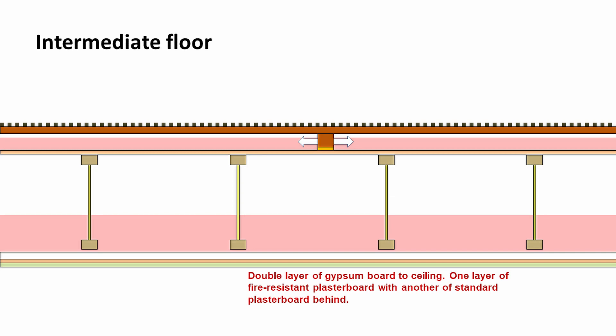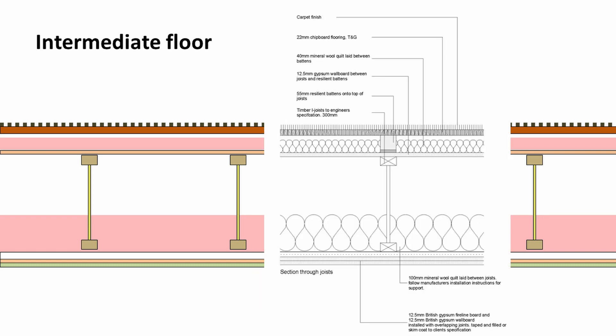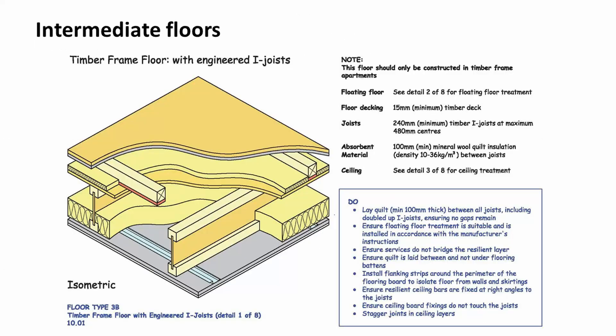To the underside we would usually have a double layer of gypsum board — one layer fire-resistant and the other standard plasterboard. Comparing that to a drawn detail, this is how you might show it within a drawing: carpet, chipboard, mineral wool, and all the layers working downwards. Going back to the 3D drawing, it's pretty much the same thing, and you can see all those component parts making up this intermediate floor.